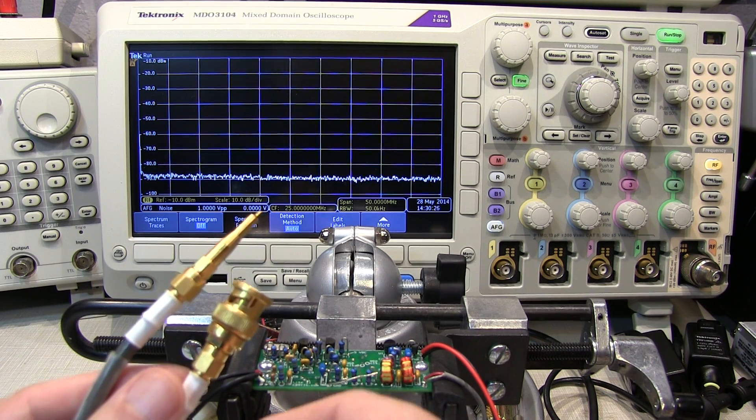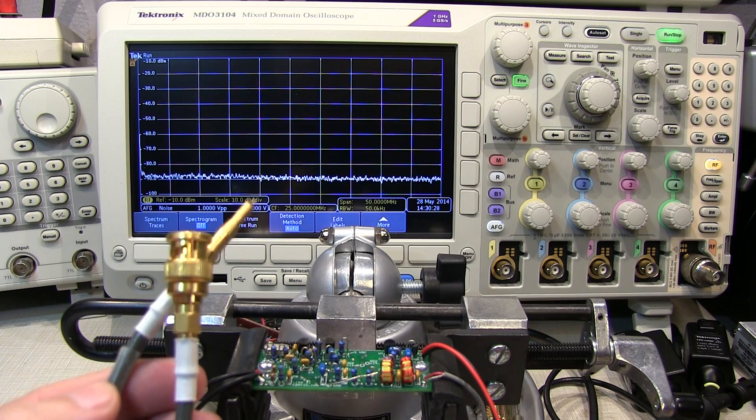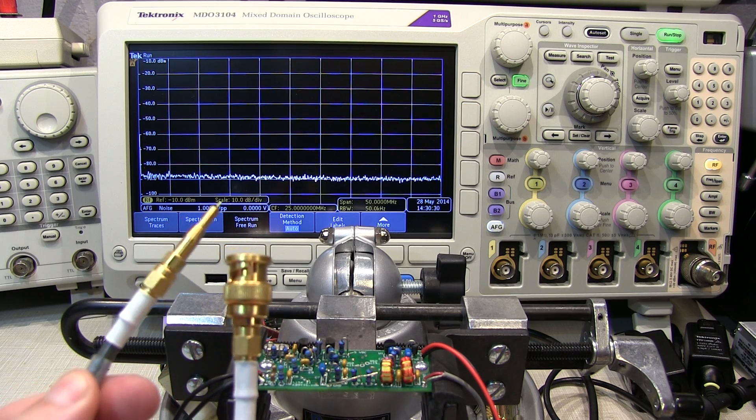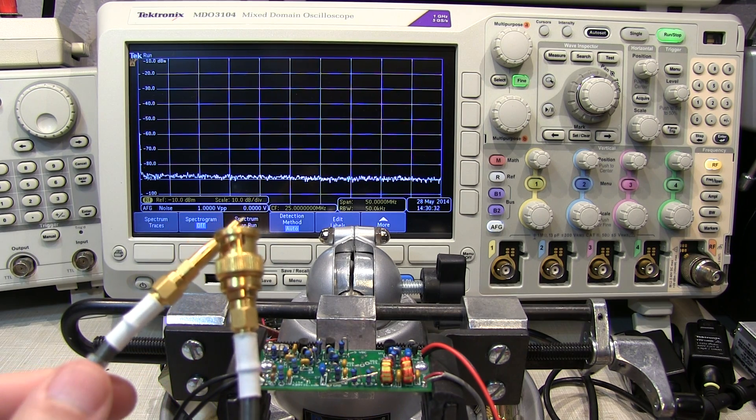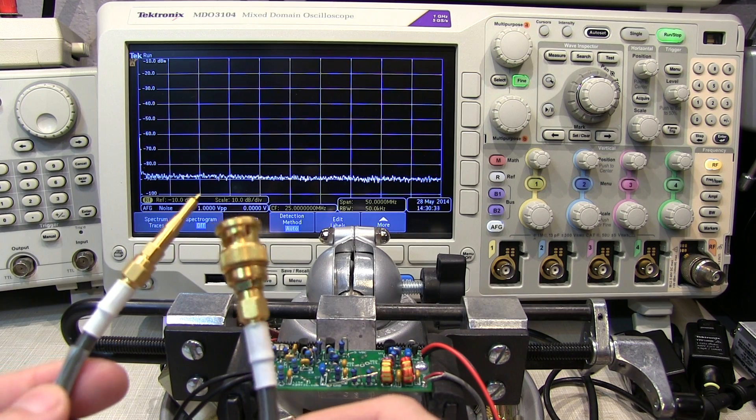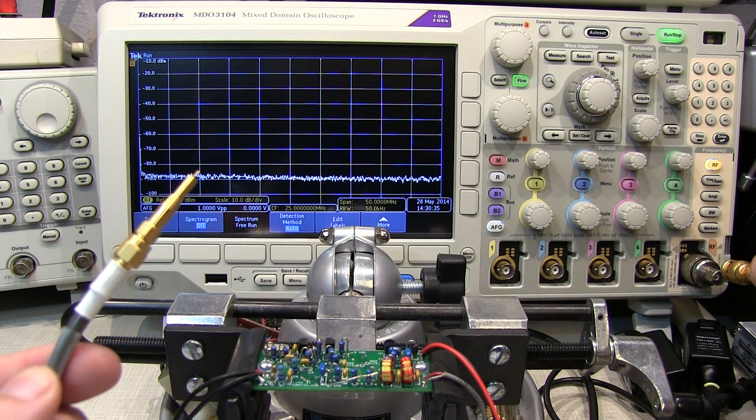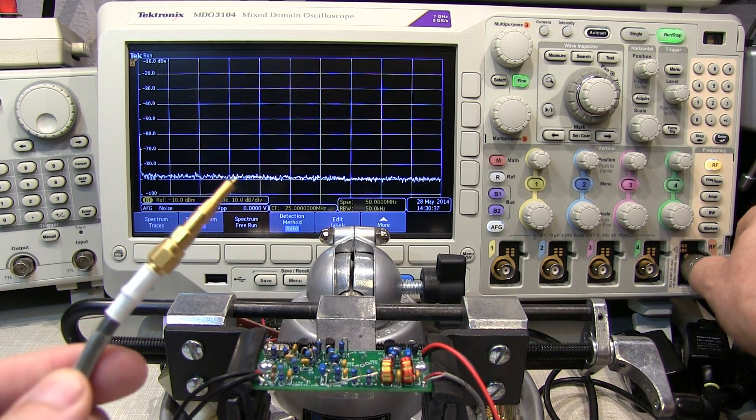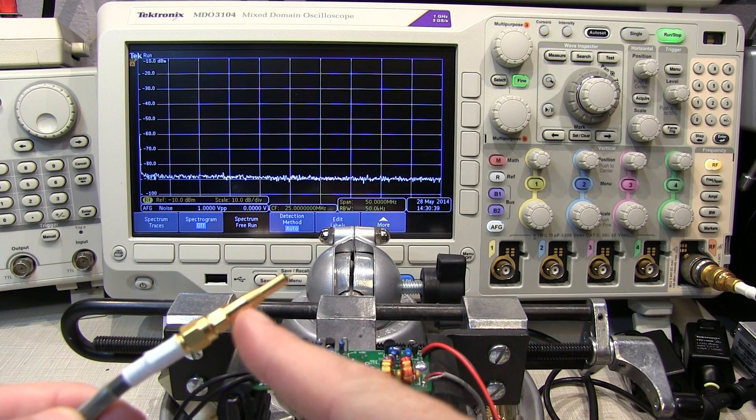We're going to measure the output using a P6150 probe, which is really nothing more than a low-capacitance Z0 probe designed for 50 ohm applications. We'll connect one end into the spectrum analyzer. On the other end, there are two tips available.